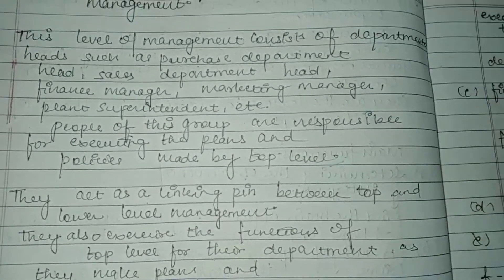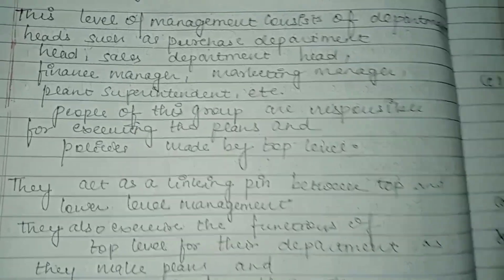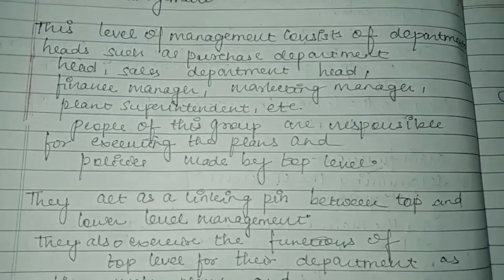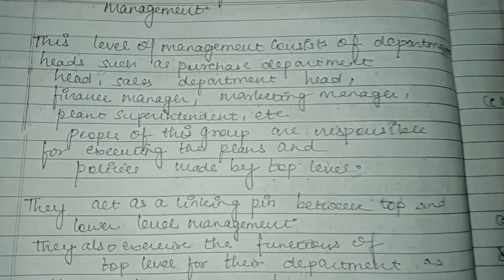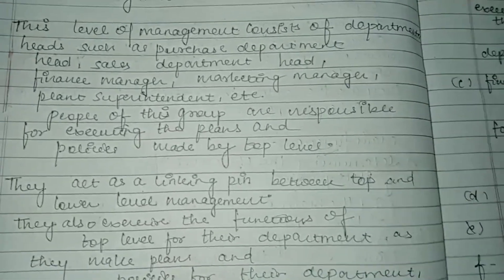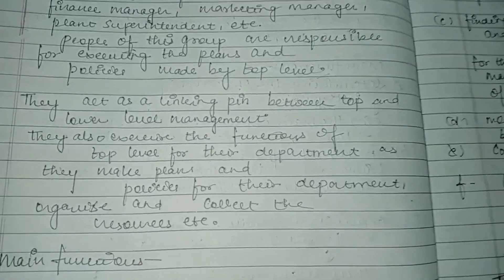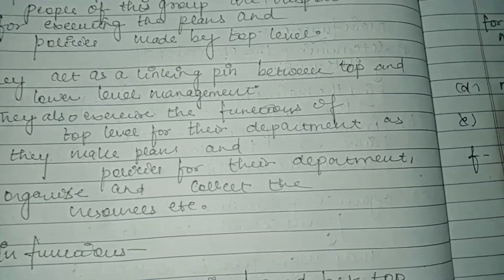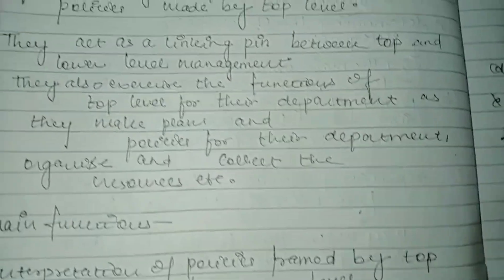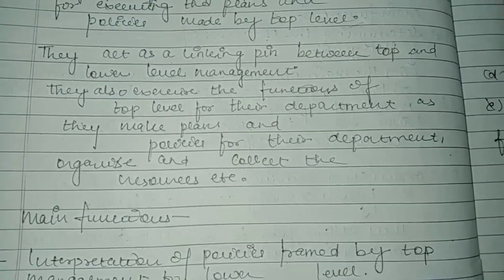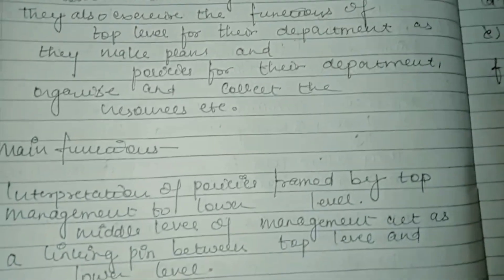Middle level management is accountable for their resources and responsible for arranging assets. It acts as a link which can convey information between top level and lower level. They also exercise the functions of top level for their own departments — planning policies, forming rules and regulations.